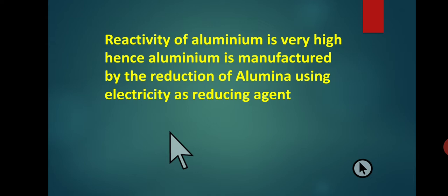The reactivity of aluminium is very high. Hence, aluminium is manufactured by the reduction of aluminium using electricity as the reducing agent. This is the electrolysis of aluminium to obtain pure aluminium.